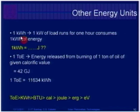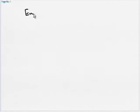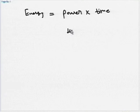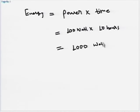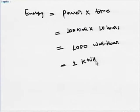One unit of electricity is 1 kilowatt-hour. One kilowatt-hour means that a 1 kilowatt load running for 1 hour consumes 1 kilowatt-hour of energy. Energy is power multiplied by time. For example, a bulb of 100 watts running for 10 hours consumes 1000 watt-hours, which we can also write as 1 kilowatt-hour. So 1 kilowatt-hour is 1 unit of electricity — the most commonly used unit in daily life.